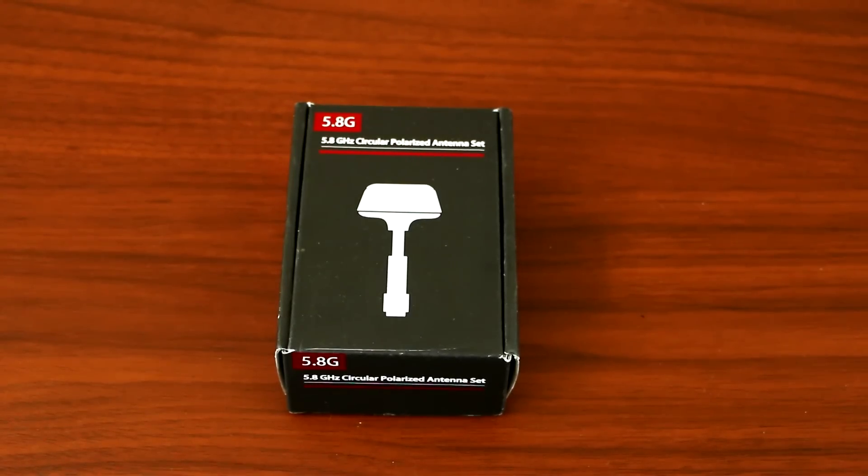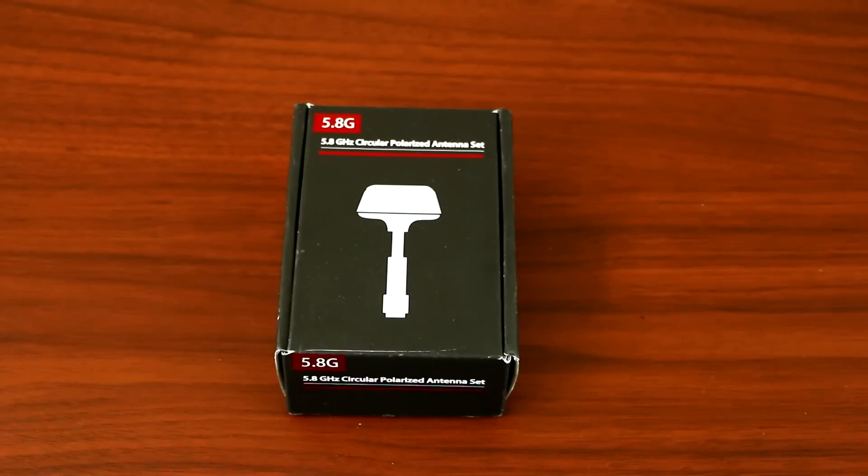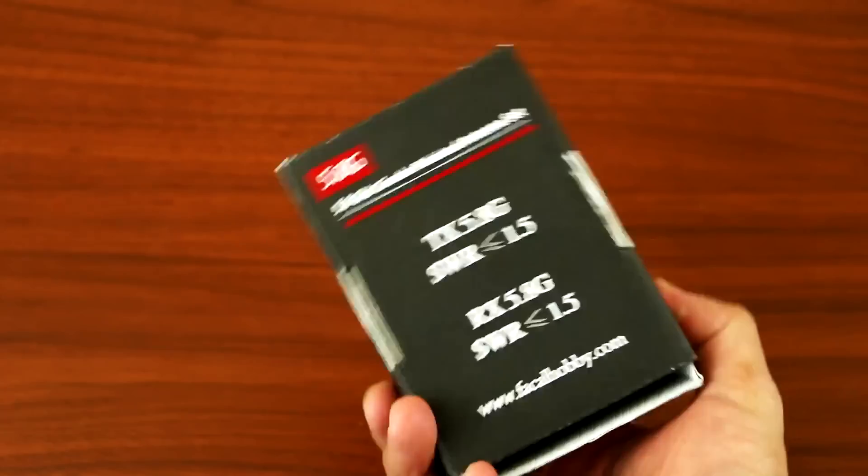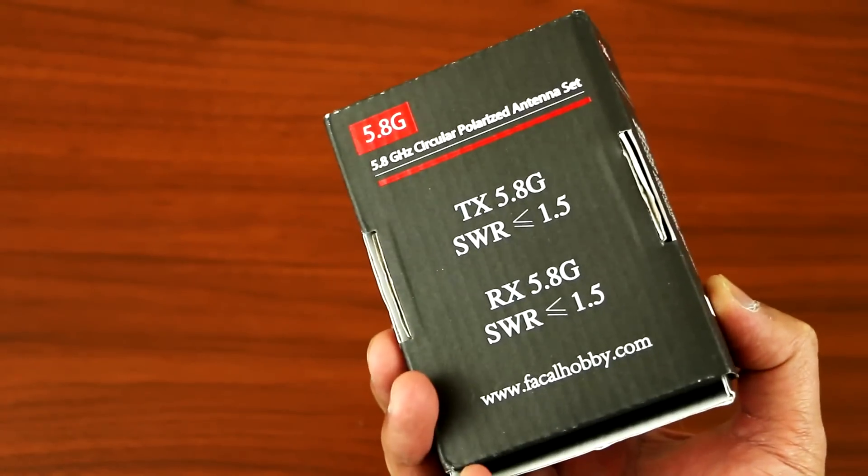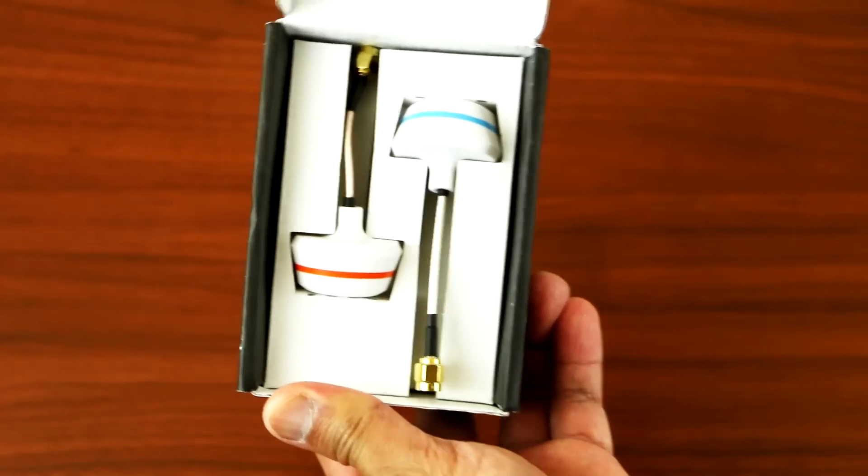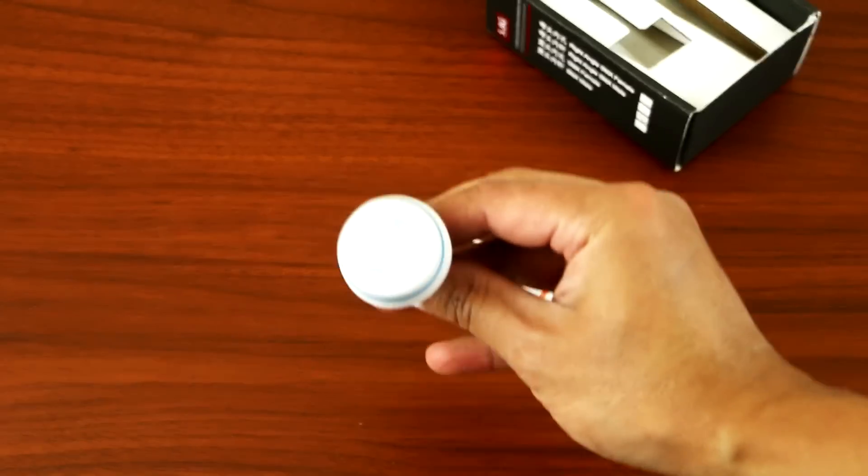Hey what's up YouTube, today I'll be showing the 5.8 gigahertz circular polarized antenna set. This is what the package looks like - you got a transmitter and a receiver. This is the receiver.